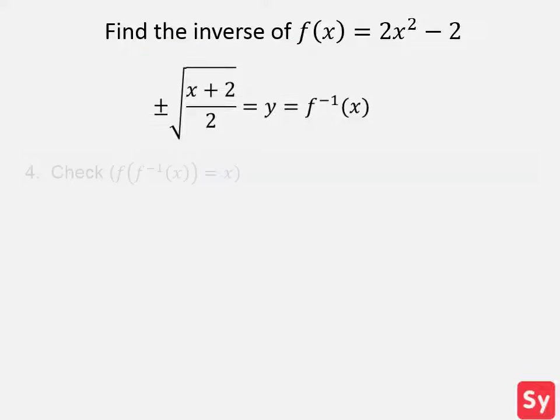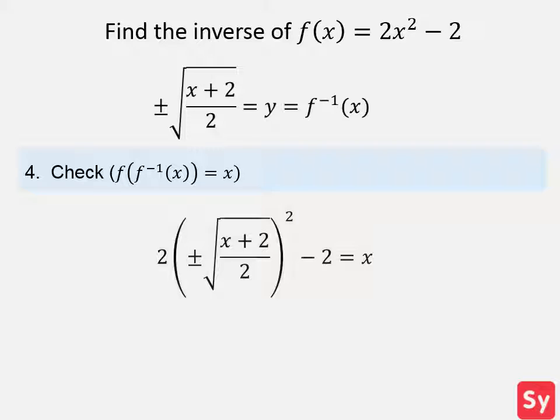Finally, we will check that the inverse is correct using this equation. We plug the inverse in for x and f of x, and it equals x. So plus or minus the square root of x plus 2 over 2 is the inverse.